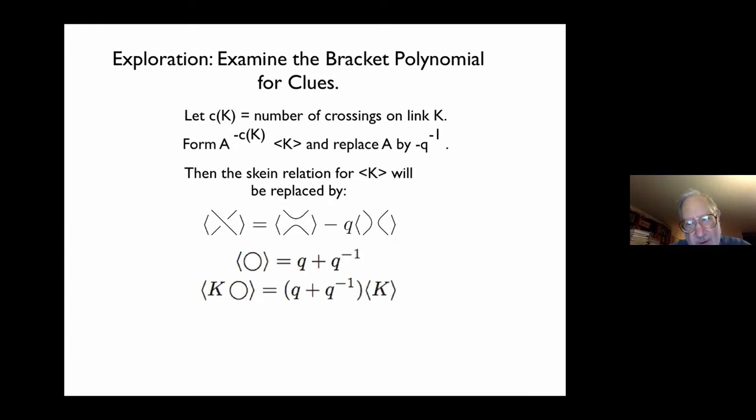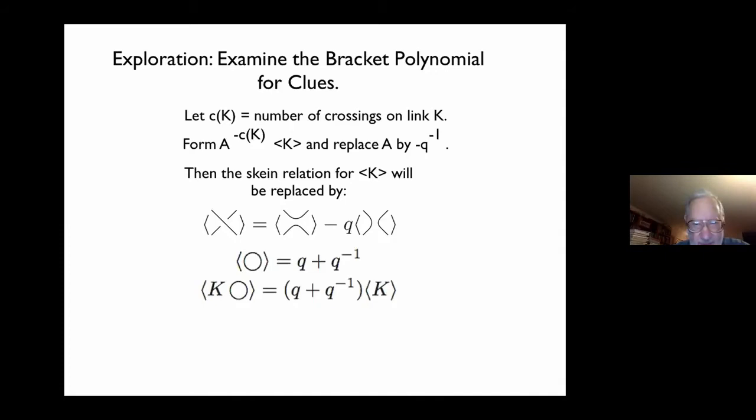This is not invariant under Reidemeister moves, and there is of course a normalization factor that takes you directly over to the Jones polynomial. The advantage of this is algebraic and combinatorial. It's quite convenient that the value of the loop is Q plus Q inverse rather than having minus signs in it, and all the problems about minus signs are relegated to that B smoothing.